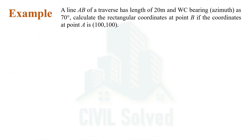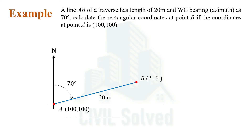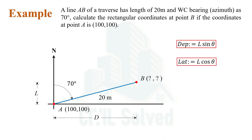Now let's solve an example. We have a line AB, part of a traverse, with a length of 20 meters and a bearing of 70 degrees in the whole circle bearing system. The coordinates of point A are given as (100, 100), and the coordinates of point B are to be calculated. Drawing the sketch for line AB: the horizontal distance is the departure — the orthographic projection on the east-west axis — and the orthographic projection on the north-south axis is the latitude.